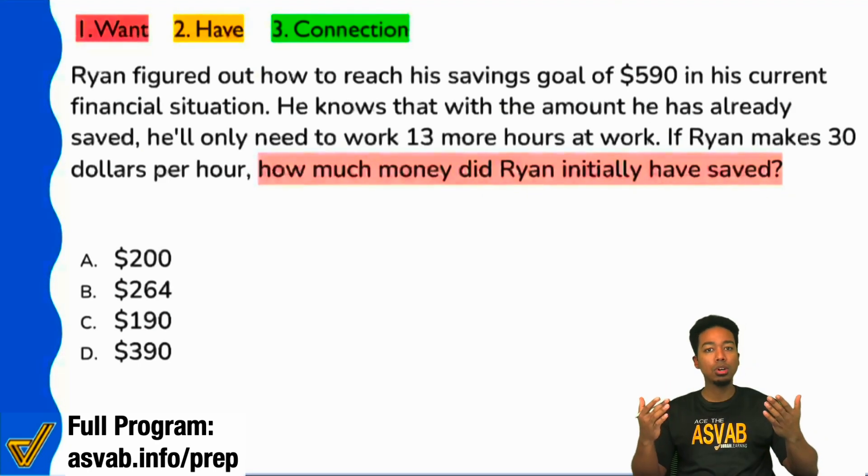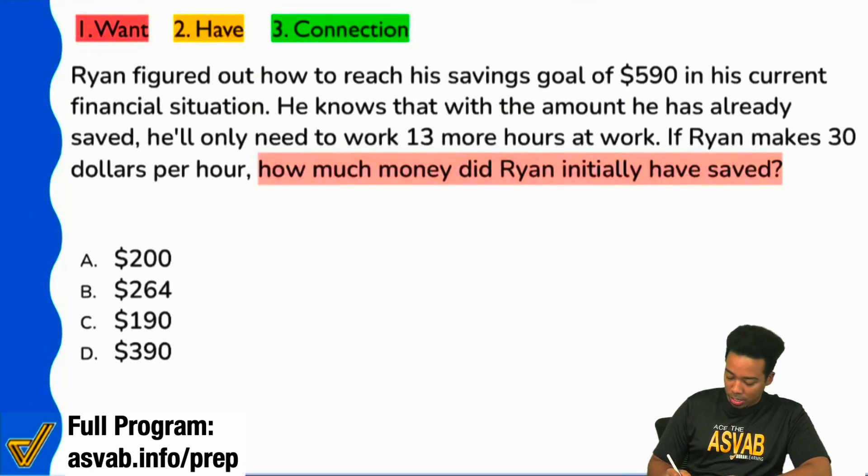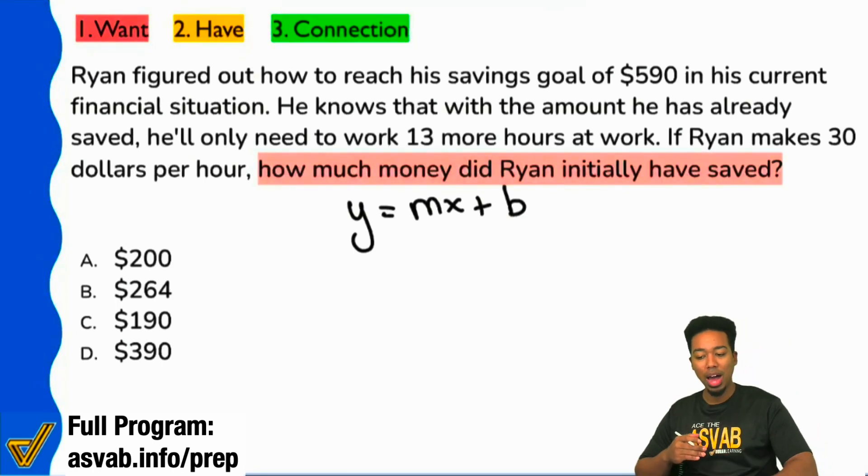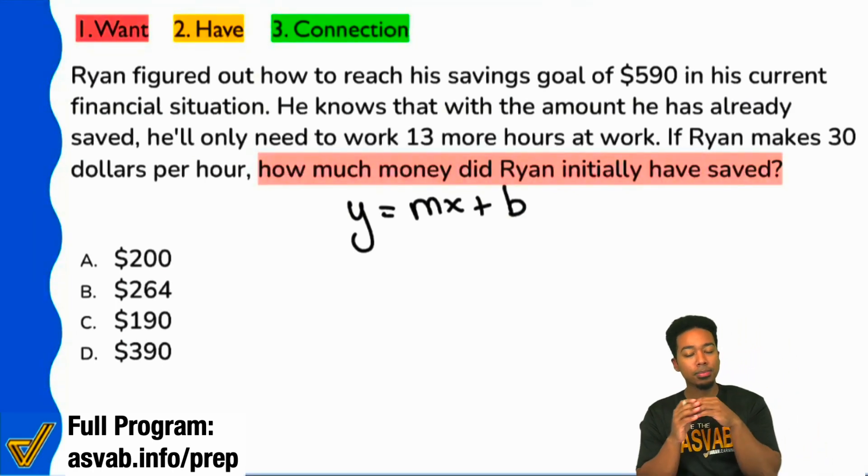Because you know that this class is talking about the linear equation y equals mx plus b, which of those pieces - the y, the m, the x, the b - which of these variables or placeholders do you think we're actually looking for when we're asked how much money did Ryan have initially saved? Which of those do you think we're looking for? Give a guess, give your best guess.